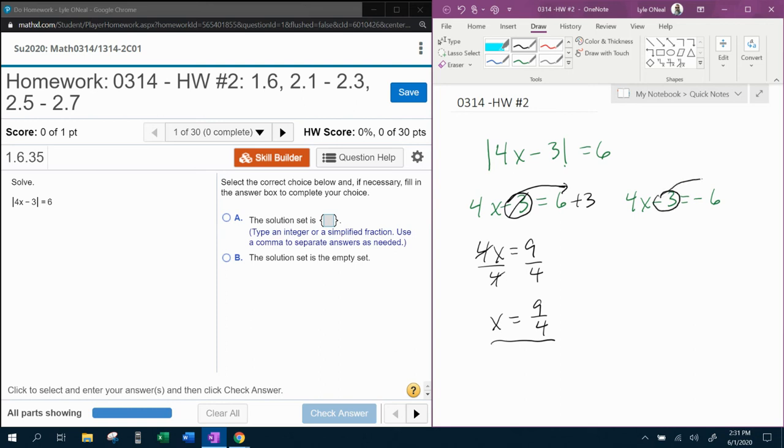Next case, moving the minus three over makes it a plus three. Negative six plus three is negative three. And divide both sides by four. We get X is negative three fourths. So both of those answers should be valid solutions.